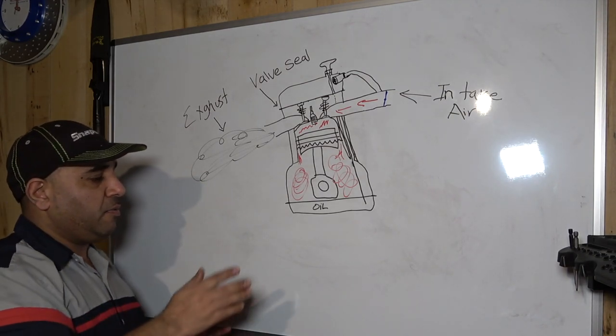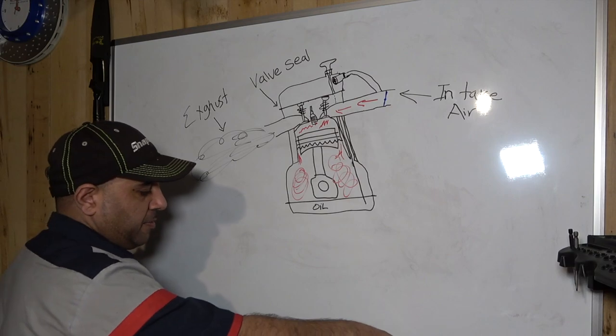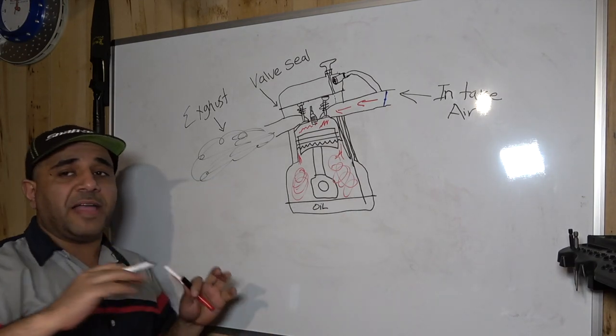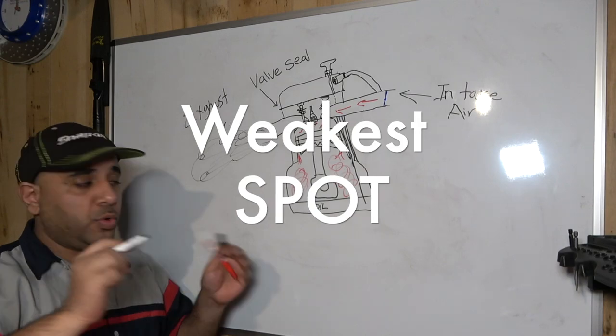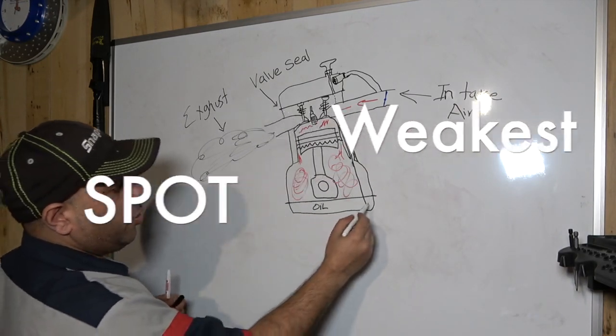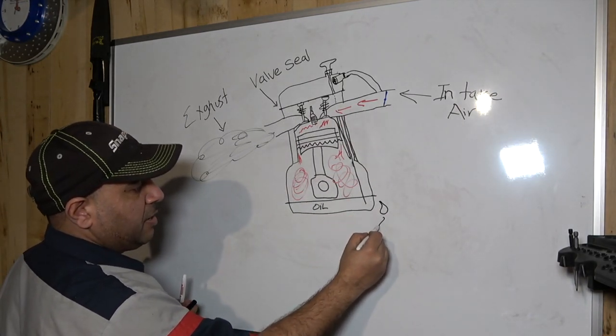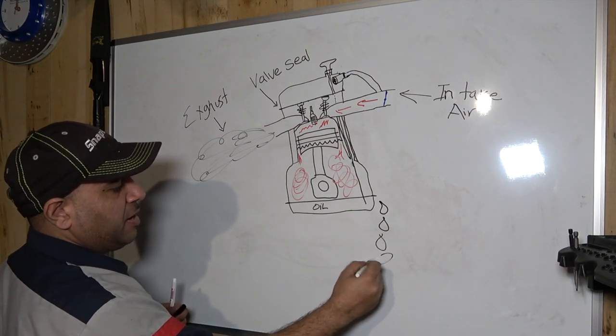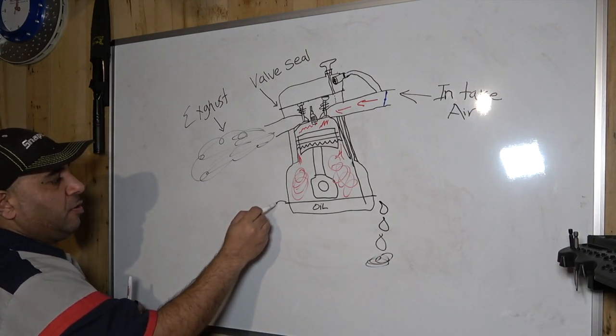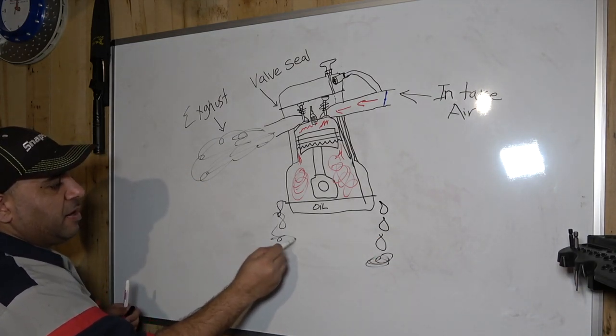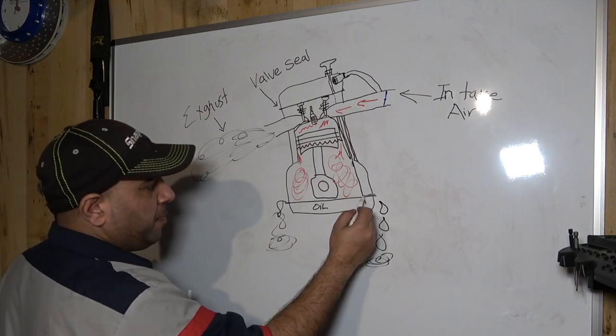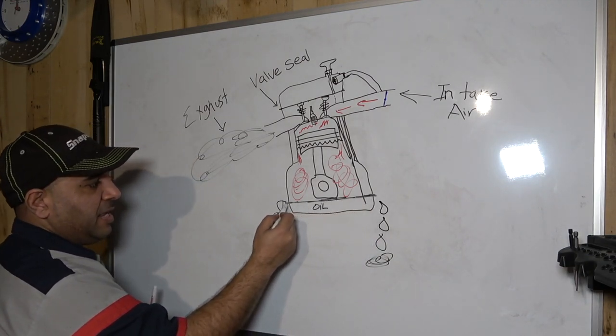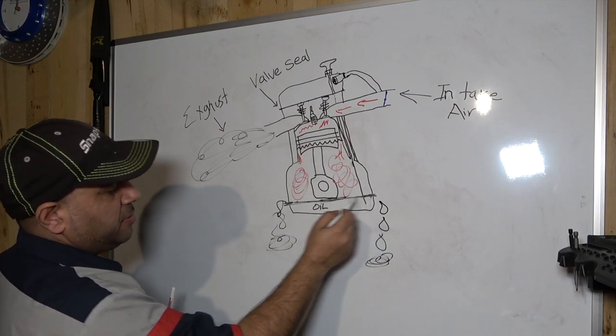We're gonna talk about this pressure buildup over here. All this pressure needs to go somewhere. If your PCV valve is jammed up, what's gonna happen is it's gonna find the weakest spot. The weakest spot will be the seal, so you're gonna have oil leaking. You're gonna have a puddle of oil, and your gasket down here might take damage.